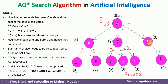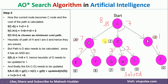We also consider D, since C and D are linked by AND. From D, there is only one path D→J. We calculate f(D,J) = 1 + 0 = 1. Since 1 is less than D's current value of 3, we propagate it back and update D's value to 1.